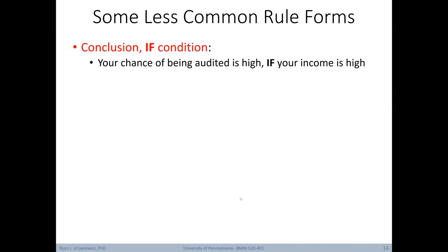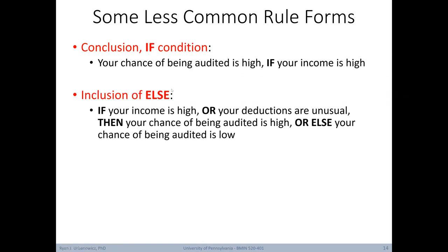There are also some less common rule forms. Sometimes rules are presented with the conclusion first: 'your chance of being audited is high if your income is high.' You might also see rules that include the else expression — if your income is high or your deductions are unusual, then your chance of being audited is high, else your chance of being audited is low. This has a similar structure to if-then-else loops from computer programming.